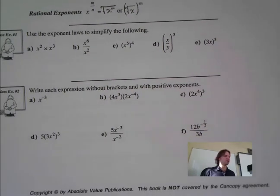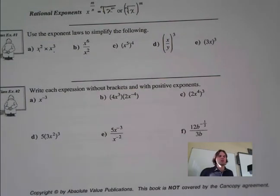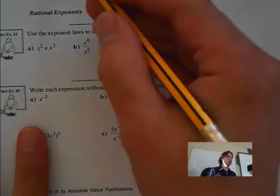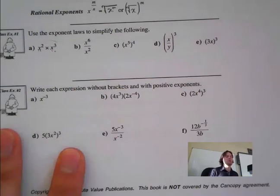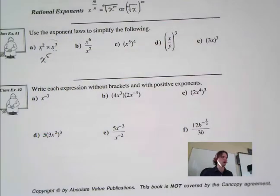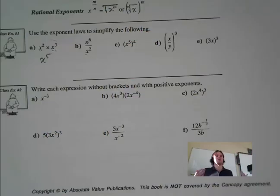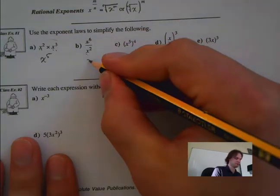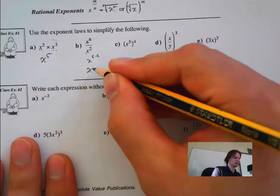Use the exponent laws to simplify the following. The first one uses the product law — same base, different exponents — so we just add them: x to the 5. This one here, same base, dividing both powers — quotient law: 6 minus 2, which is x to the 4.